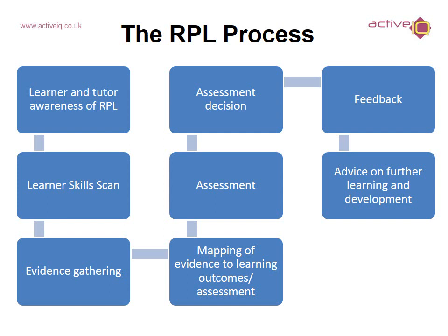Let's look at the RPL process. Firstly, the learner and tutor must be aware of any RPL. The learner would then complete a skills scan to show what they have completed in the past and how it maps to current criteria. You would gather the evidence such as certificates, CVs, and CPD logs, and map the evidence to the learning outcomes and assessment criteria within the current unit. The assessment would take place to make a clear decision, and then the assessment decision is fed back to the learner on the RPL decision. This includes written and verbal feedback, and lastly, advice on further learning and development. Either the RPL is accepted or you may need to complete an individual learning plan with the learner to identify the gaps and how they are going to meet them.